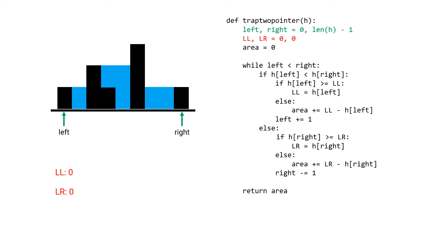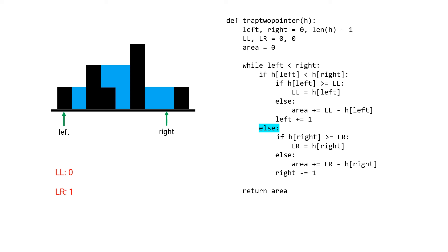This algorithm is a bit confusing so let's go over a sample run. We start with left and right pointers and LL and LR variables initialized to zero. The height of left and right are both one so we go to the else: the right height of 1 is greater than the current largest right of 0, so we update it and move the right pointer left. Now right height is 0 and left height is 1, so right is less — we go to else again. The height of 0 is less than the largest right of 1, so we add 1 minus 0 equals 1 unit to the area. Again right is lower than left, so right height 0 is less than largest right 1, adding 1 more unit to the area.